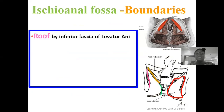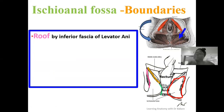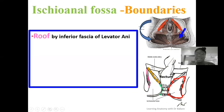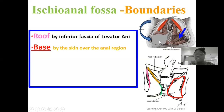The roof is formed by the inferior fascia of the levator ani muscle. Looking at the posteriorly placed anal triangle, the structure forming the roof is the pelvic floor or pelvic diaphragm, which is structurally made up of the levator ani muscle. The inferior fascia of the levator ani thus forms the roof of the ischioanal fossa. The base is formed by the skin lining over the anal region.